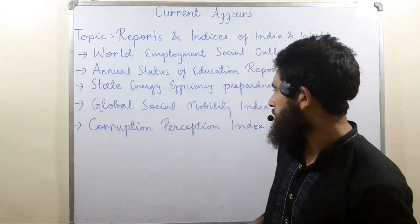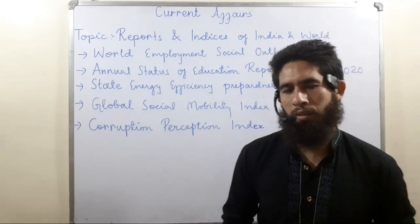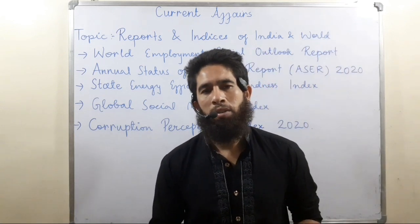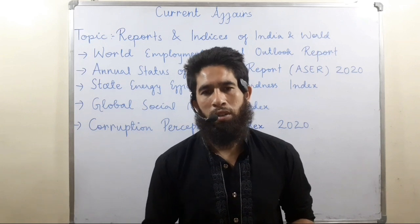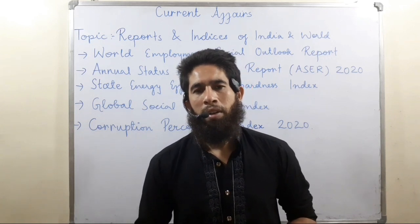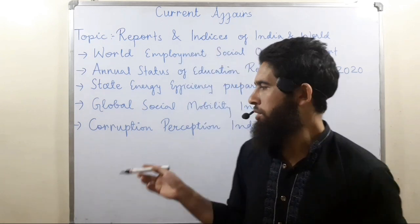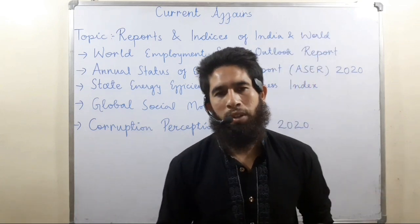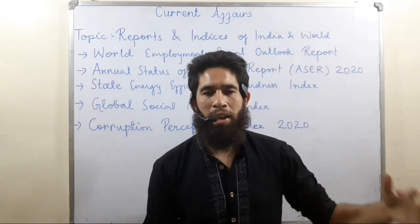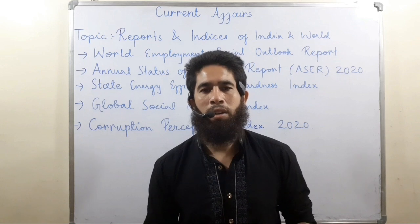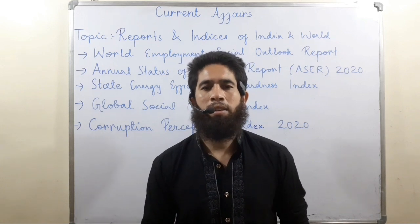Next is the Corruption Perception Index, released by Transparency International. It scales countries from 0 to 100, where 0 represents a highly corrupt country and 100 represents a clean country.